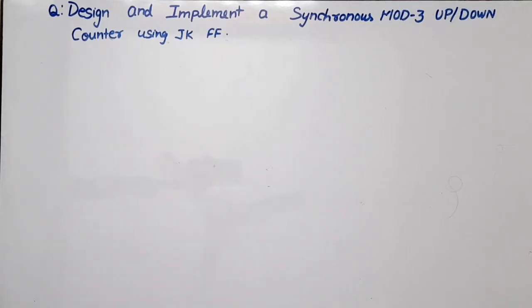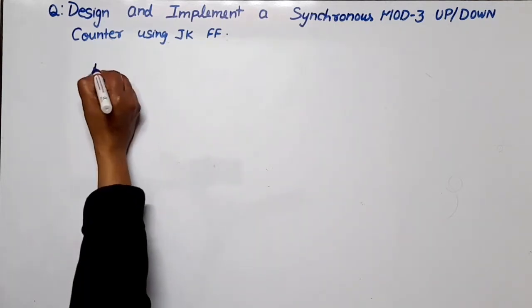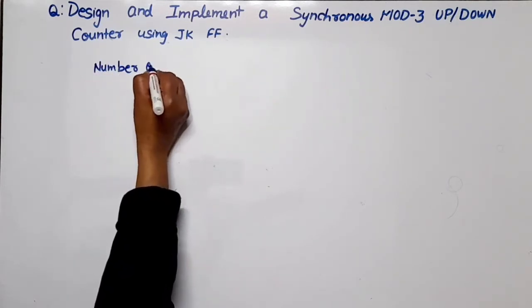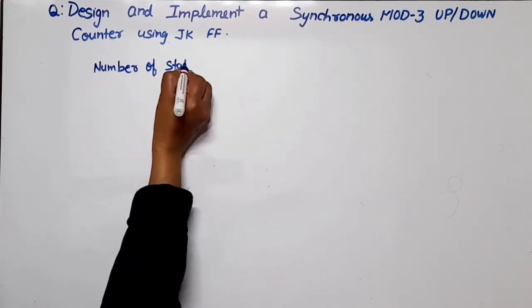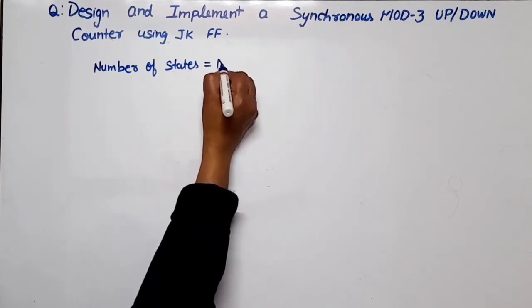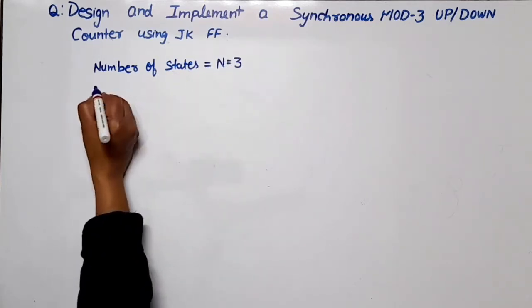Hello everyone. In this video lecture of digital electronics or digital system design, I am going to design and implement a mod 3 synchronous up-down counter using JK flip-flops. This is a mod 3 counter. The number of states which can be counted by this counter will be equal to N = 3.